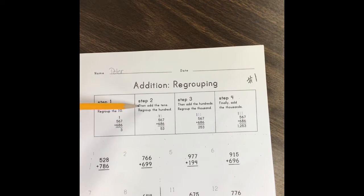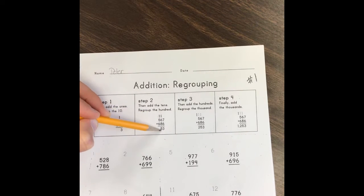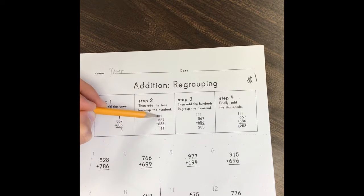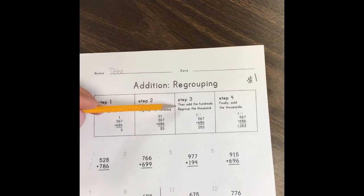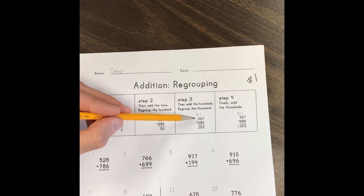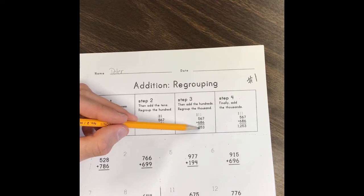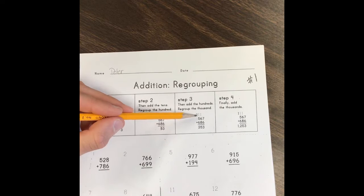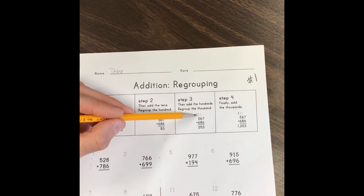Step two: then add the tens, regroup the hundred. Add six plus eight, which equals fourteen, and we add our one from step one to get fifteen. The five goes in the tens place, and our one from fifteen moves up to the hundreds place. Step three: then add the hundreds, regroup the thousand. Five plus six is eleven, plus another one is twelve. The one from the hundreds place moves to the thousands place.